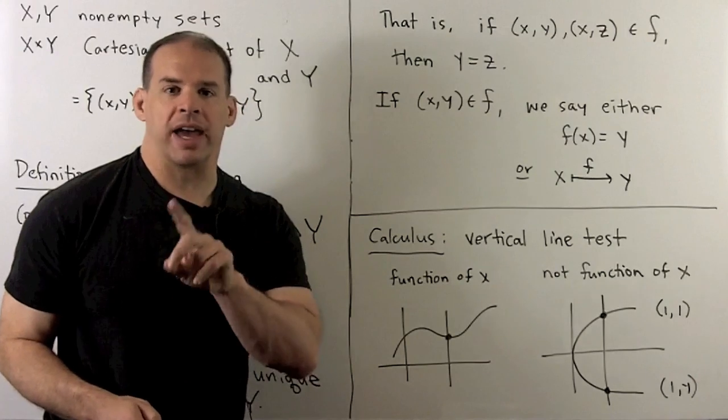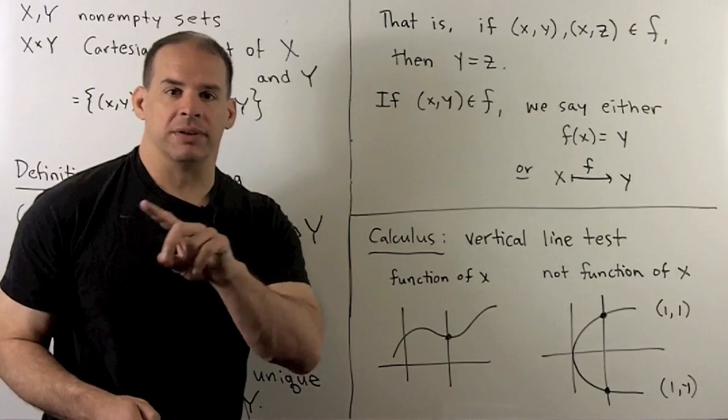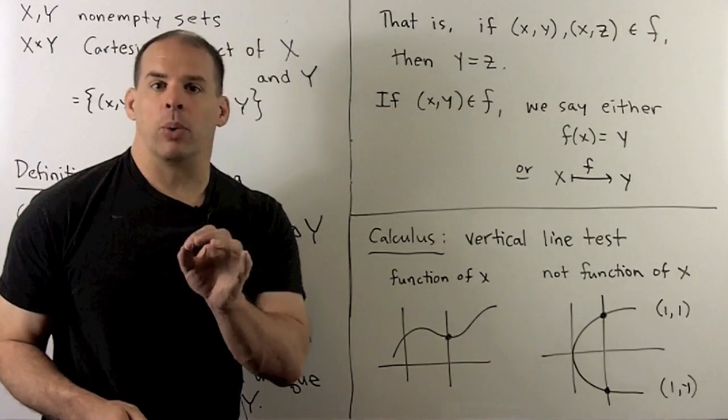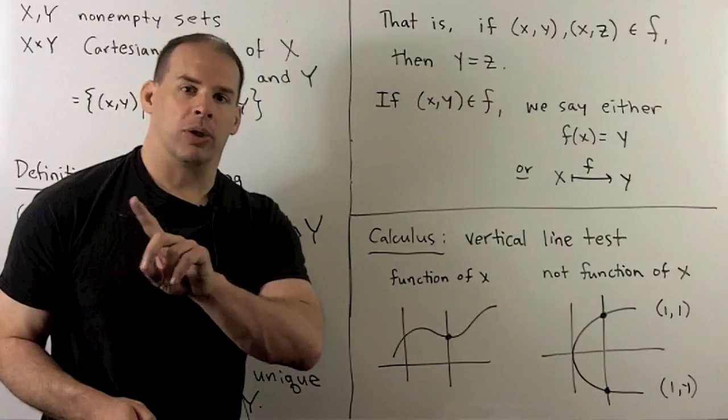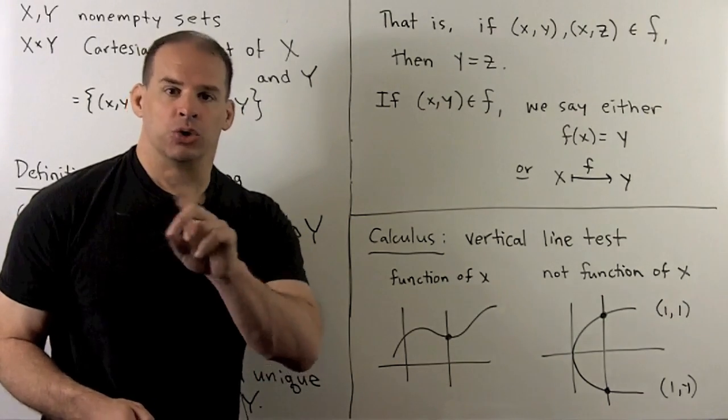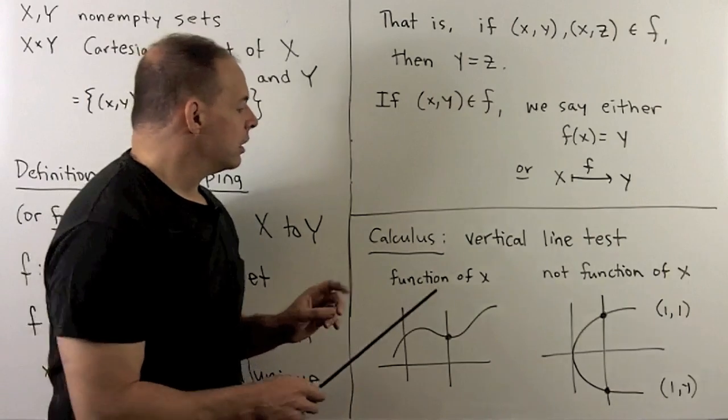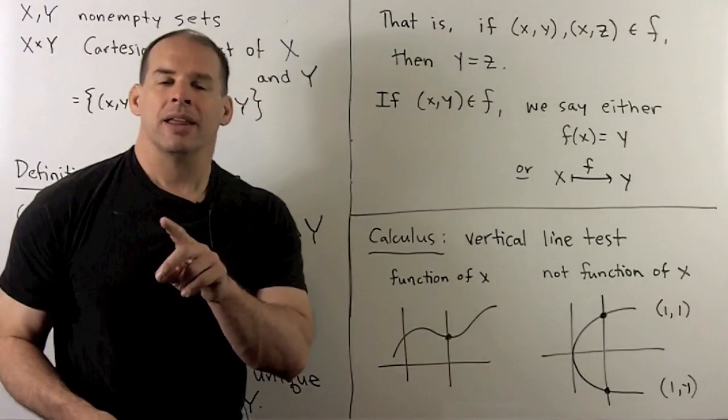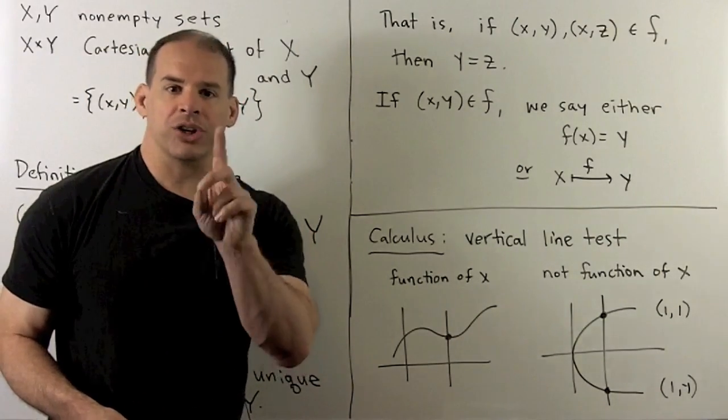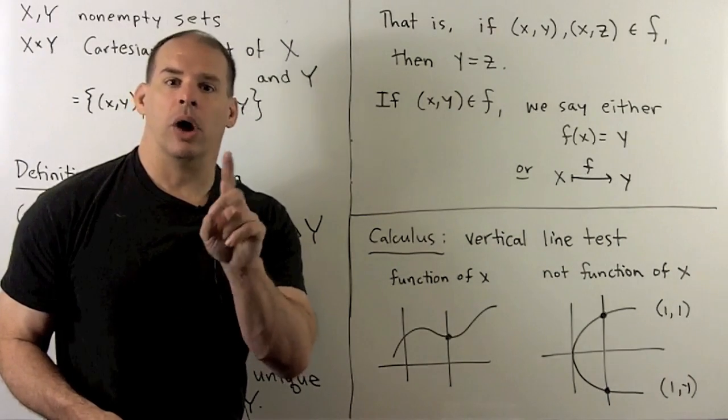Now, if we're in precalculus or calculus, we've seen functions in there. The familiar way that we test for whether we have a function or not, we draw the graph, and then we apply the vertical line test. So, the idea is going to be, if I have a function, then any vertical line will intersect our graph, at most, one point.